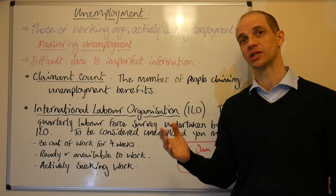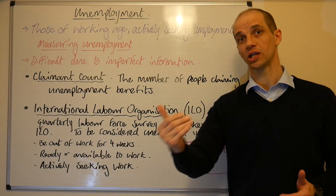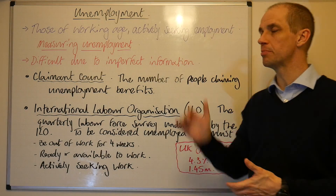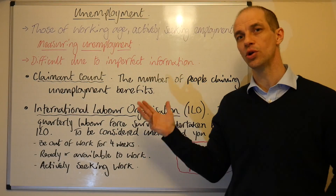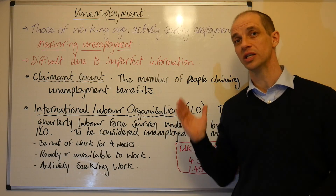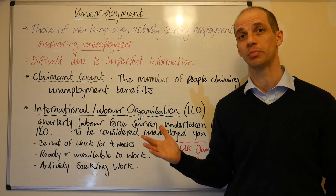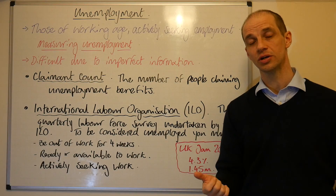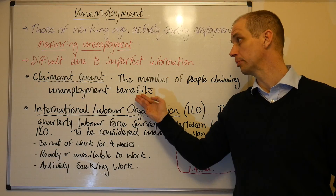In those sorts of circumstances the figures can be skewed and distorted, suggesting unemployment is higher than it is. So it's an imperfect scenario, but nevertheless it's the best we've got. Let's look at the two clear measures. Firstly, the claimant count — this is simply the number of people registered, seeking work and claiming unemployment benefits.